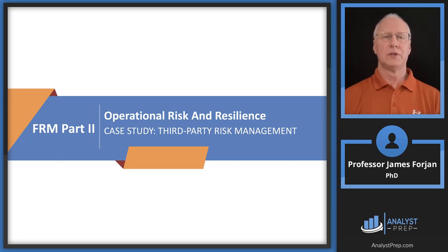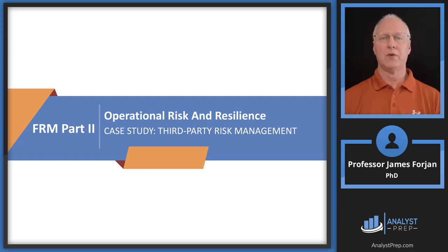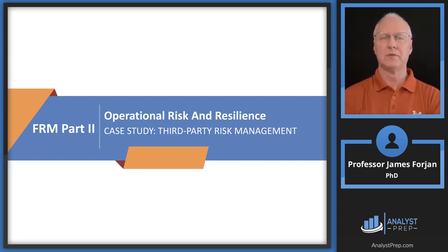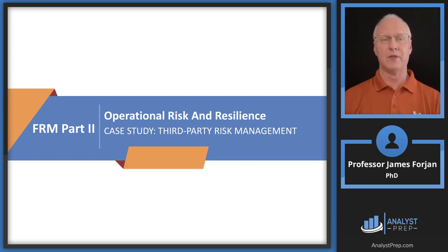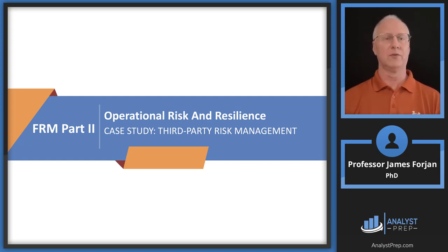This is FRM Part 2, the topic on operational risk and resilience, and the chapter on a case study: third-party risk management. The very first paragraph in this chapter uses the two terms interchangeably — third-party risk and outsourcing risk — so make sure you're aware of that for the exam.